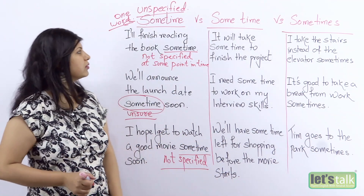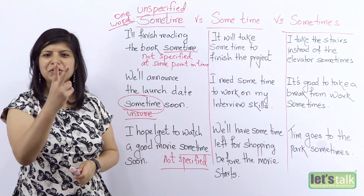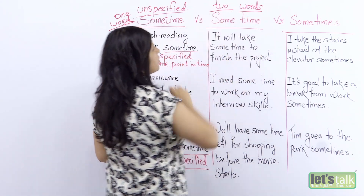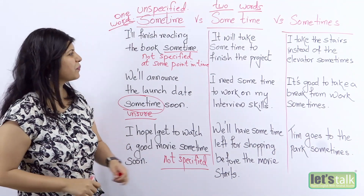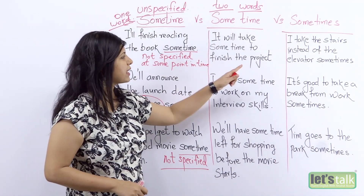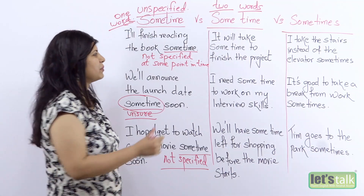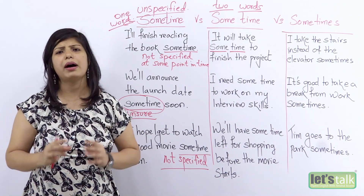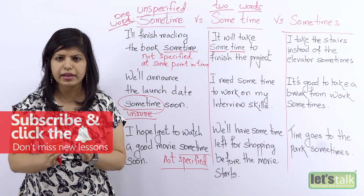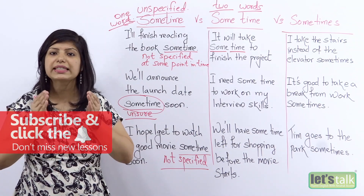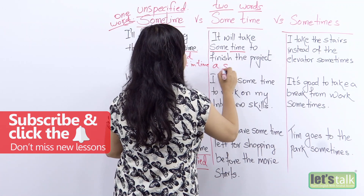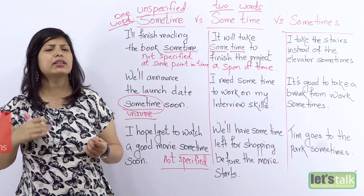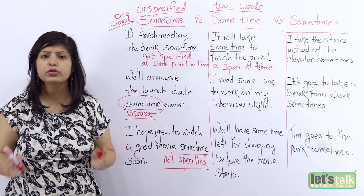Moving on to the next part of the board: 'some time' — two words. Notice these are two words — a very big difference. Let's see through examples. The first sentence: 'It will take some time to finish the project.' This means that you will take some particular amount of time — maybe a short period or a long period — but you know it's going to take some time. It is basically a span of time. Maybe two weeks or a month — it's going to take some time.